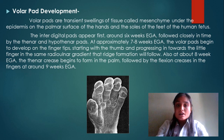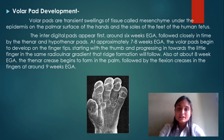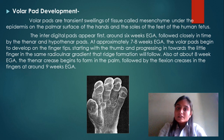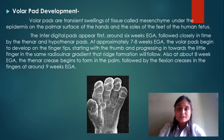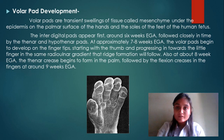Volar pad development starts from 6 weeks of pregnancy. The mesenchymal tissue spreads throughout the hand, causing swelling and softness. Development starts at 6 weeks; by 7 to 8 weeks it starts from the thumb, where tissue called thenar develops. By the 8th week it is fully developed throughout the hand, forming creases in the palm, and by the 9th week volar pad development is complete.